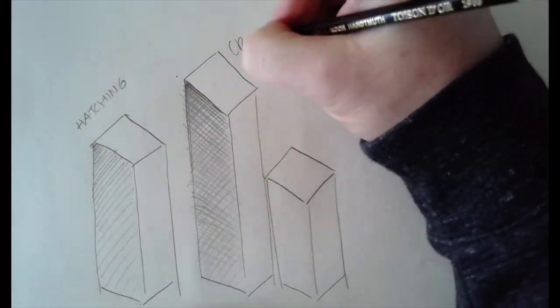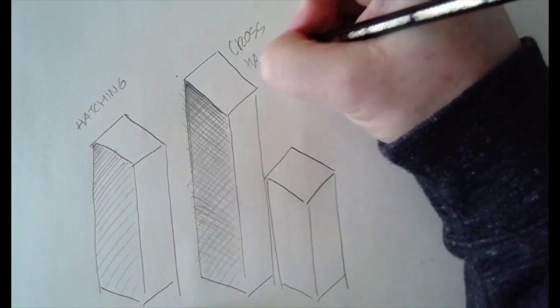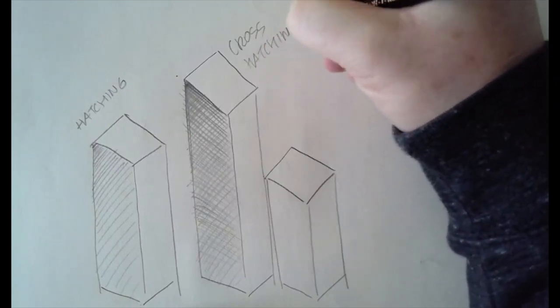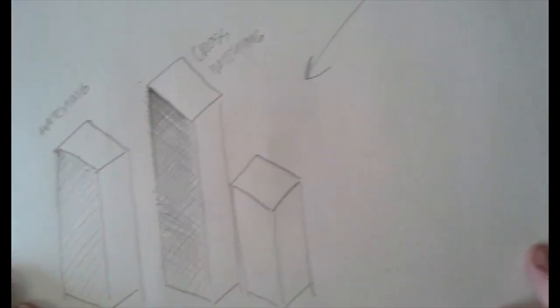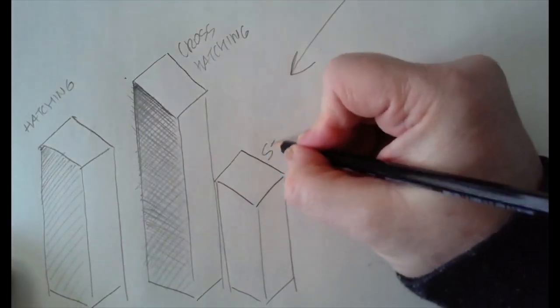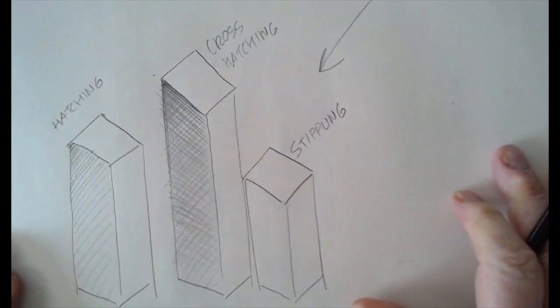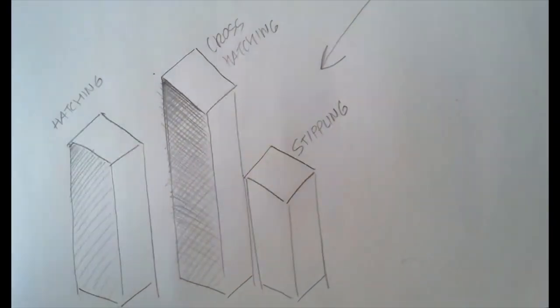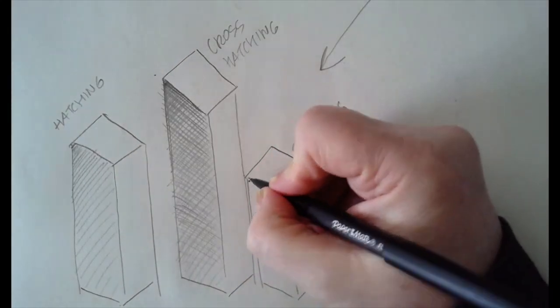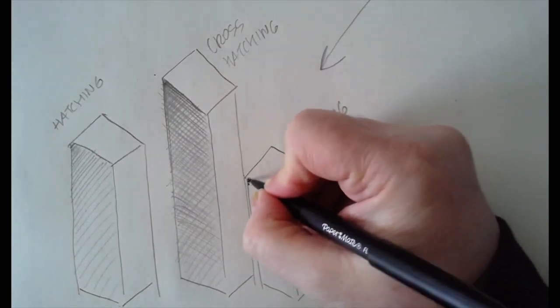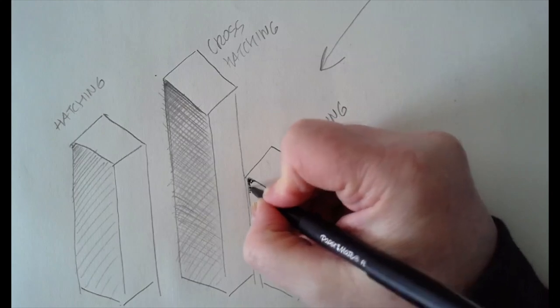Now, this is crosshatching. And then the last one is stippling. Now, for stippling, it works best with a marker. So I'm going to go and demonstrate with that. But you can do this with a pencil too. For stippling, basically, you're taking your marker or your pencil and you're making dots like this.